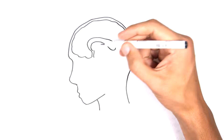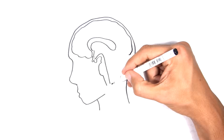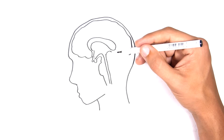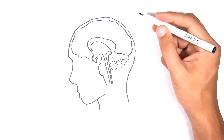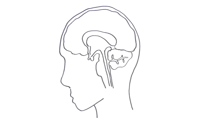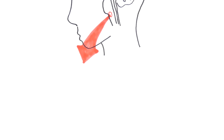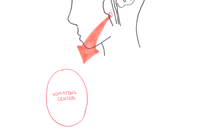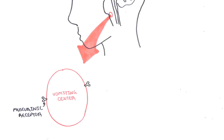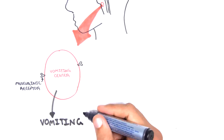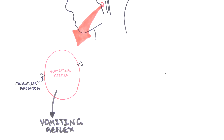We will look at the so-called emetic reflex, which is the vomiting reflex. In order to understand the vomiting reflex, we need to talk about the brain. There is an area of the brain stem called the medulla oblongata, where we find what's called the vomiting center. The vomiting center contains essentially muscarinic receptors, and when these receptors are stimulated, this will trigger the vomiting reflex.